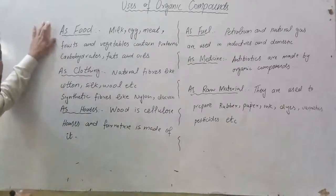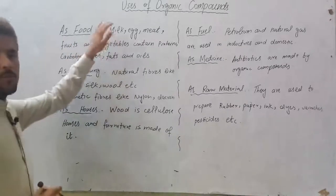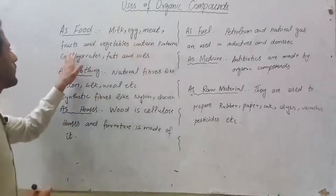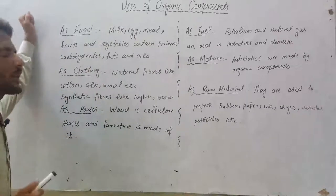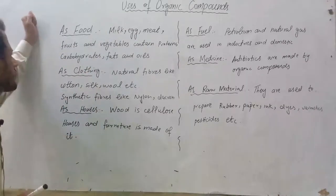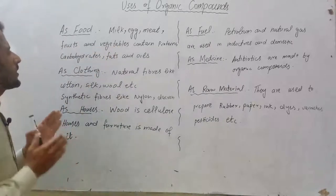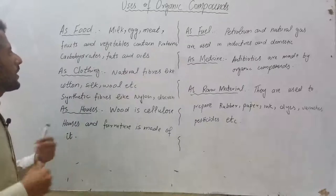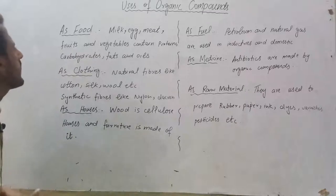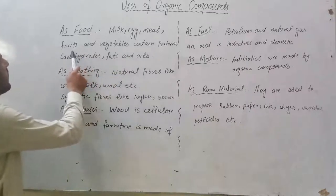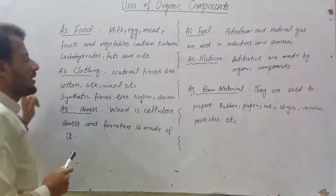First of all, as food. We use milk, eggs, meat, fruits and vegetables. We use all of them as organic compounds. Milk, egg, meat, fruits and vegetables contain proteins, carbohydrates, fats, oils, and vitamins.